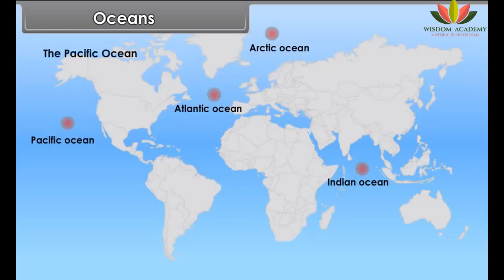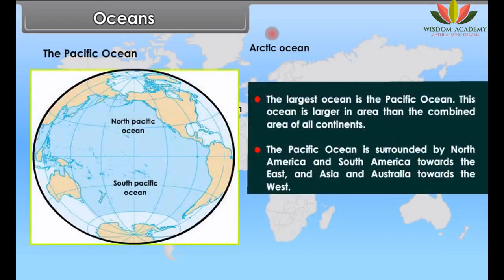The largest ocean is the Pacific Ocean. This ocean is larger in area than the combined area of all continents. The Pacific Ocean is surrounded by North America and South America towards the east, and Asia and Australia towards the west.